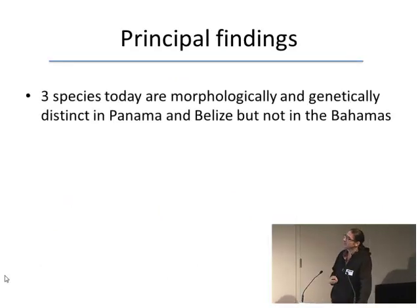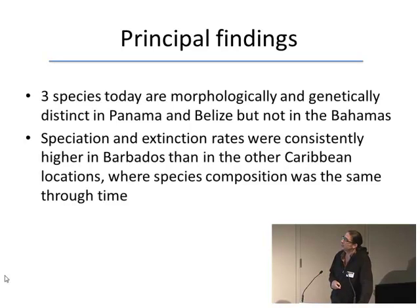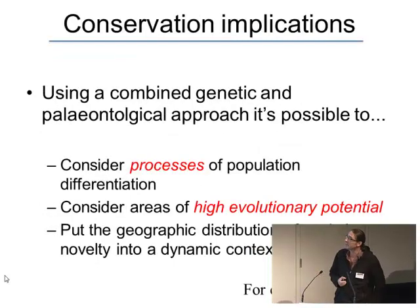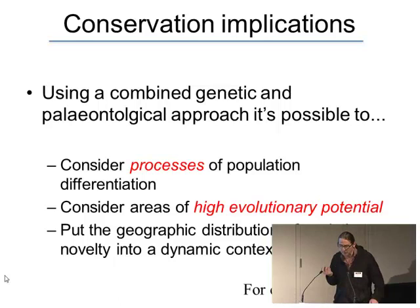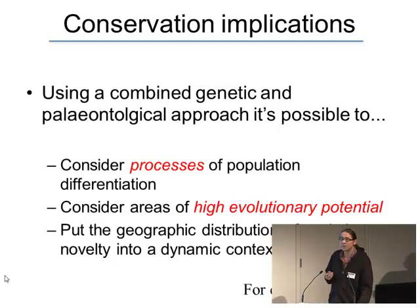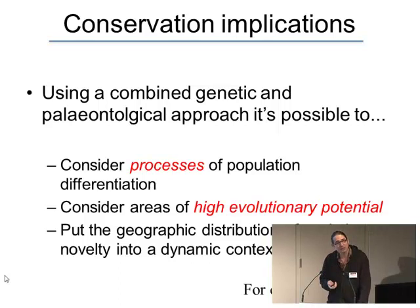To summarize: three species today are morphologically and genetically distinct in Panama and Belize but not in the Bahamas. Speciation and extinction rates were consistently higher in Barbados than in other Caribbean locations where species composition was the same through time. Evolutionary novelty through speciation and hybridization is concentrated at the geographic margins in this complex in the Caribbean. Using this combined genetic and paleontological approach, it's possible to consider processes of population differentiation, areas of high evolutionary potential, and the geographic distribution of evolutionary novelty in a dynamic context — adding another dimension of diversity and process to our understanding and conservation of biodiversity.